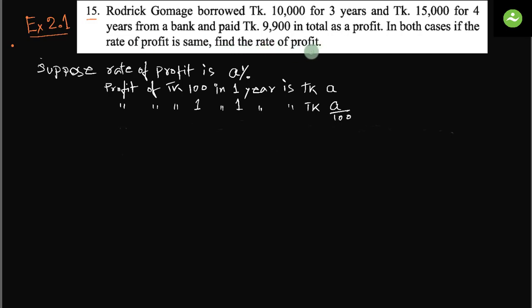So all we have to find out is the rate of profit. And what is rate of profit? The profit of taka 100 in one year is rate of profit. Suppose rate of profit is taka a or a percent. Then profit of taka 100 in one year is taka a. Profit of taka 1 in one year is taka a by 100.